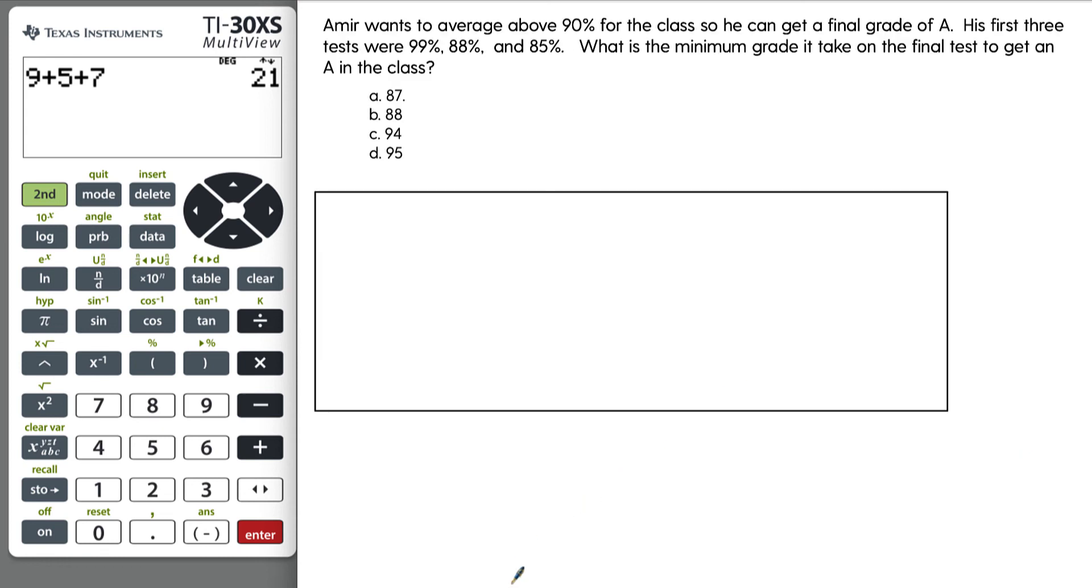Here is a more real world example, actually something I used to do when I was a student and potentially a way that you might see it on the GED. So Amir wants to average above 90 percent for a class so he can get a final grade of an A. His first three tests were 99 percent, then 88 percent, and then finally 85 percent. What is the minimum grade he'll take on the final test to get an A in the class? Trying to figure out, is it even possible for Amir to get an A in this class, and if so, how well does he have to do on this final test? There's actually three tests that he's taken so far, and the final test will be the fourth. And he wants to average 90 percent.